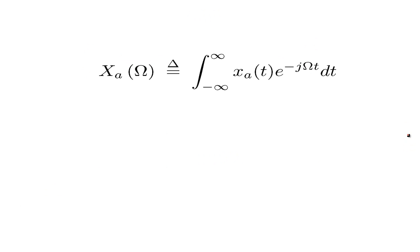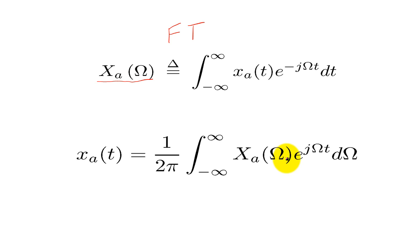We are able to directly examine the frequency content of signals such as X sub A of T by using the Fourier transform shown above. The frequency domain signal is represented by X sub A of Omega, where Omega is measured in radians per seconds. Similarly, we are able to transform X sub A of Omega back to the time domain by using the inverse Fourier transform.